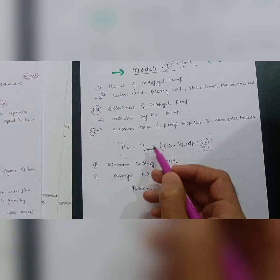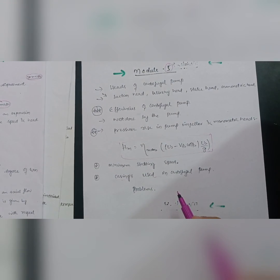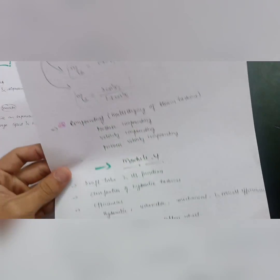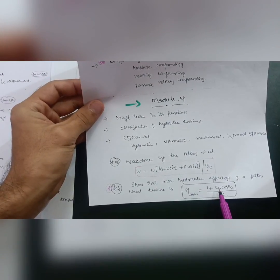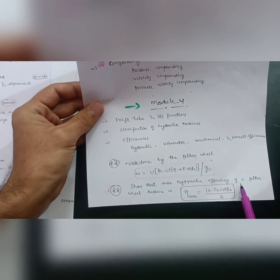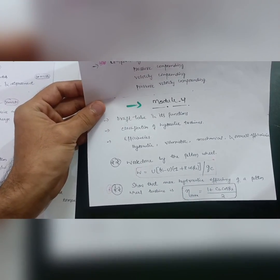If you have fundamental concepts of applied thermodynamics and basic thermodynamics, the problems in Module 5 are easy — just based on these formulas. In Module 4, you can attempt the problems based on the two derivations I already mentioned: calculate work done and hydraulic efficiency of the Pelton wheel turbine, as questions will be asked on that basis.